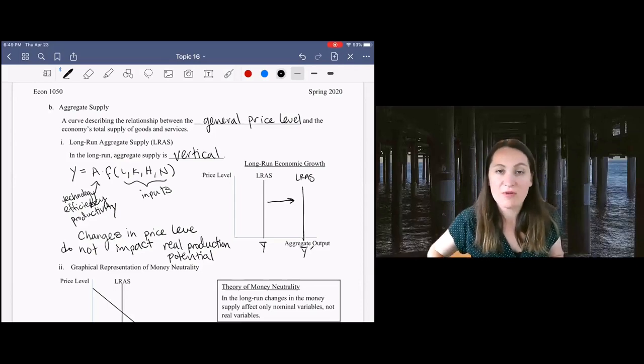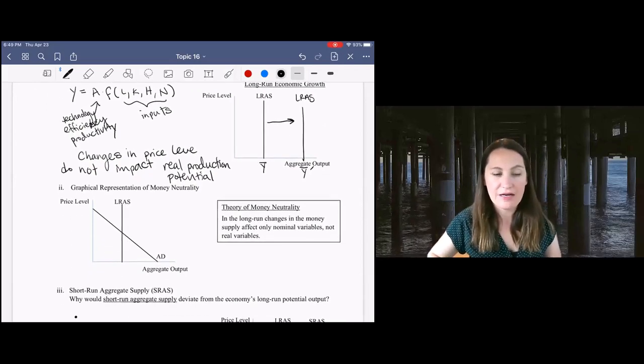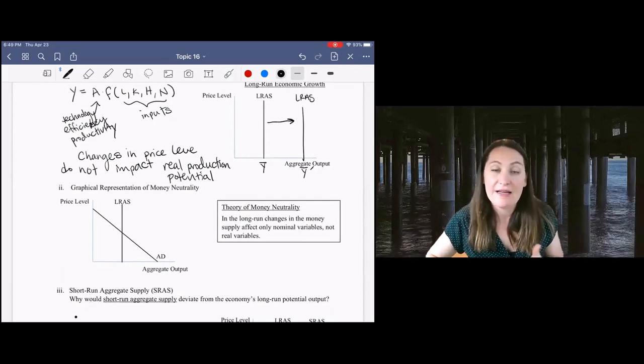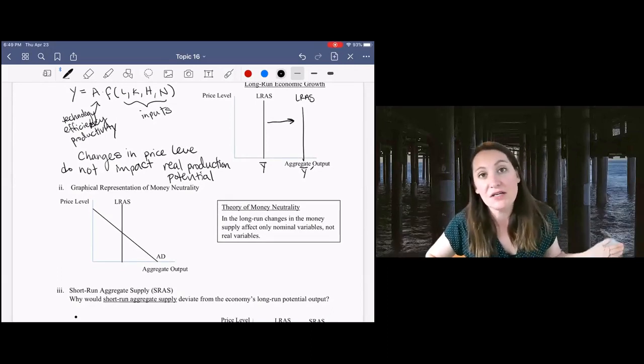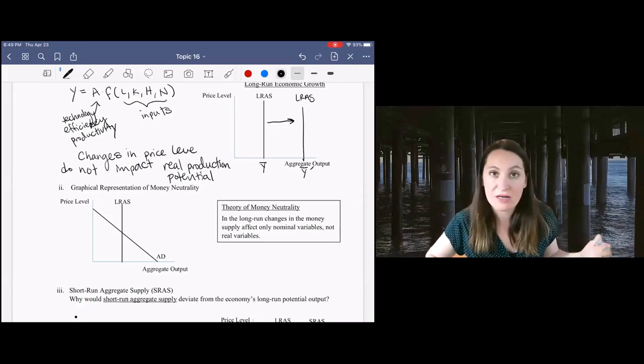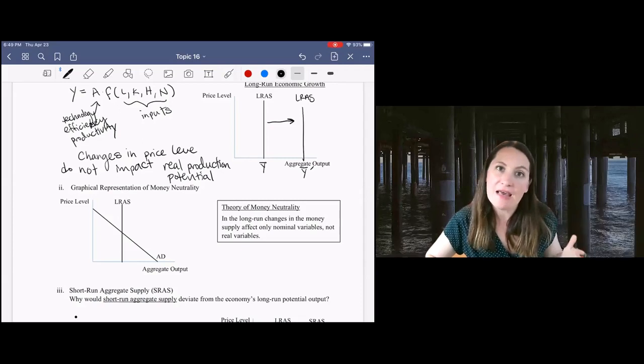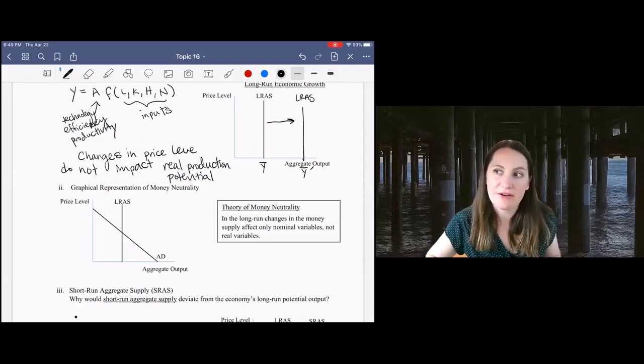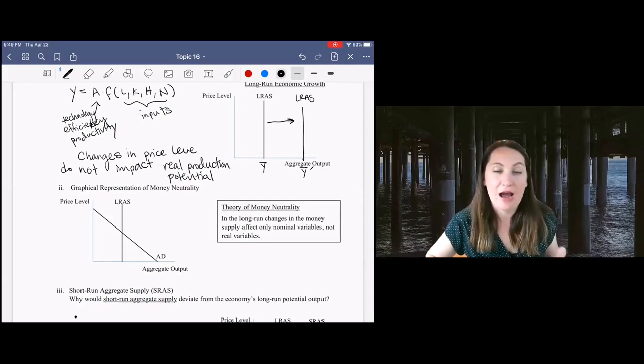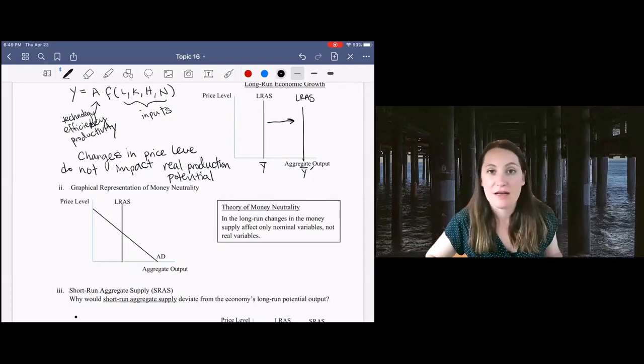This is described by the theory of money neutrality. The theory of money neutrality says that in the long run, if we change the money supply, if we change the amount of money in the economy, there's going to be inflation. Prices will go up, but it will not impact any of the real variables in our economy. Output will stay the same, unemployment would stay the same.